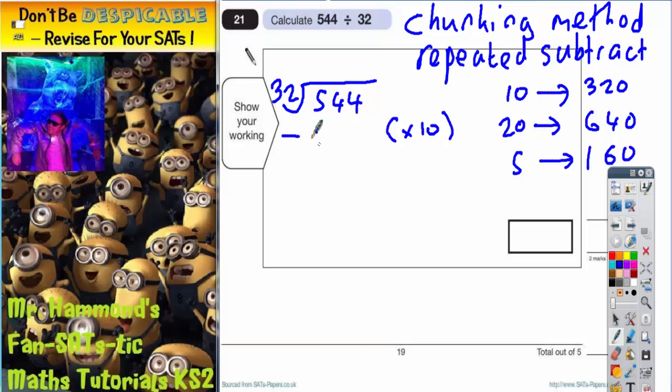First of all, we're going to subtract 320. Okay, so it's just a simple subtraction: 4 take away 0 is 4, 4 take away 2 is 2, 5 take away 3 is 2 again. So we're now down to 224.